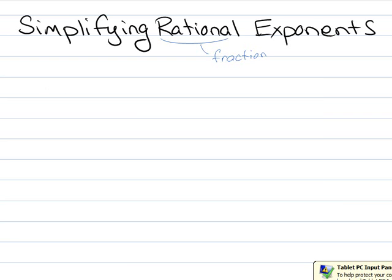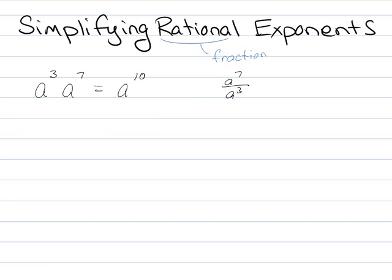Remember, if I have a couple of things like a cubed times a to the seventh, you add those and you might get a to the tenth. If I had a to the seventh over a cubed, I would subtract those and get a to the fourth. If I had a to the second to the fourth, I multiply those together.